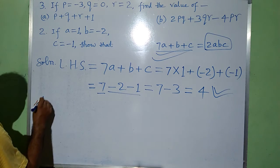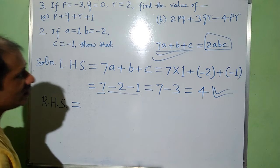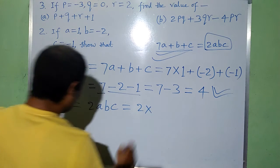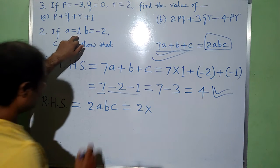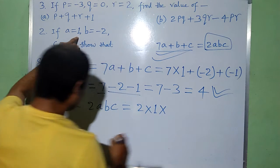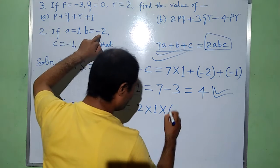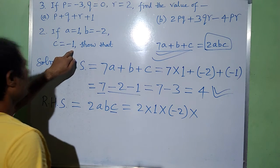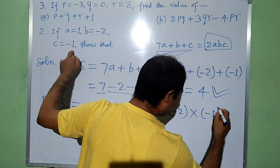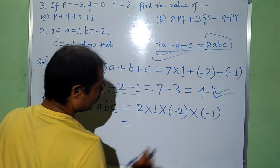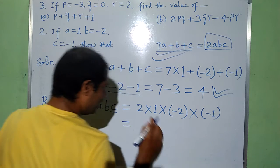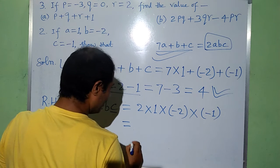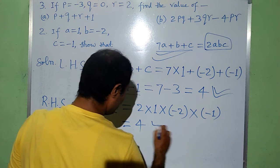Now RHS is equal to 2abc. It will be equal to 2, with a replaced by 1, b replaced by minus 2, and c replaced by minus 1. Now minus into minus gives plus. So 2 times 1 times 2 times 1: we get 2 and 2 makes 4, and 4 is the value of RHS.